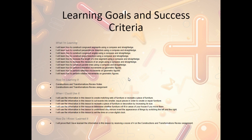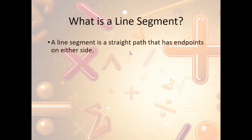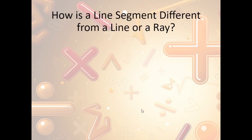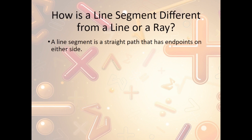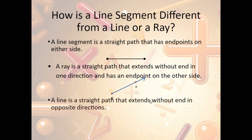Let's take a look at the constructions and transformations review notes. What is a line segment? A line segment is a straight path that has endpoints on either side. How is that different from a line or a ray? A line segment has endpoints on both sides. A ray extends without end — it goes on forever in one direction and has an endpoint on the other side. A line extends forever with no end on both sides.